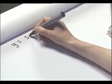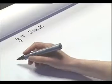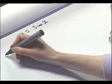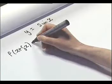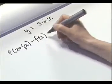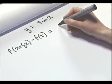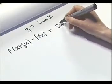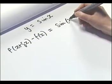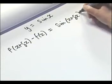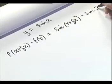We have y equals sine x. Let's start by looking at the top part of our formula: f of x plus delta x minus f of x. Since sine x is our function of x, our function of x plus delta x is the sine of x plus delta x, minus our function of x, so minus sine x.